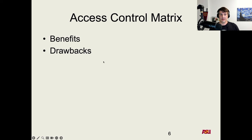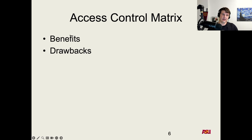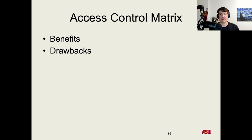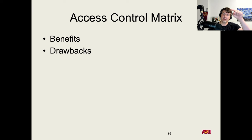Think about other benefits and drawbacks of the matrix model — feel free to write them in the comments. This is how we can model the access control of a system and reason about how access control changes when subjects take actions. Conceptually, this is what you do as an attacker — not formally, but building up that model in your mind and thinking through all the possibilities of what you can do and how it influences the access control of the system.